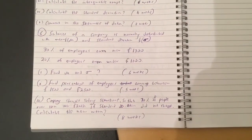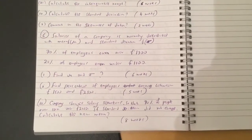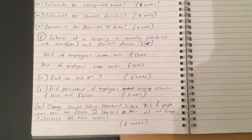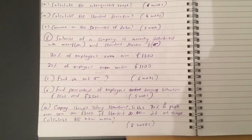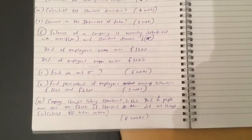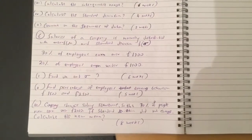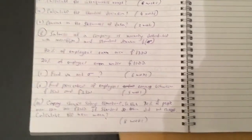The company changes salary structure so that 70% of people now earn over $2,000. If standard deviation did not change, calculate the new mean. Okay guys, good luck and I will post the solutions later today. Thank you.